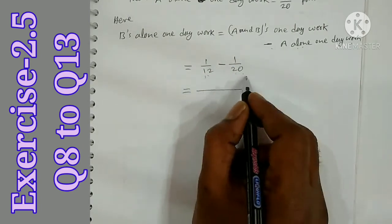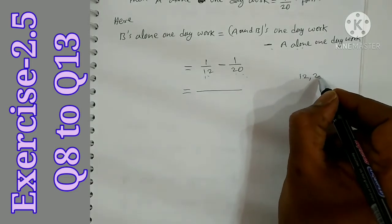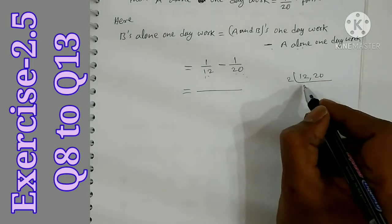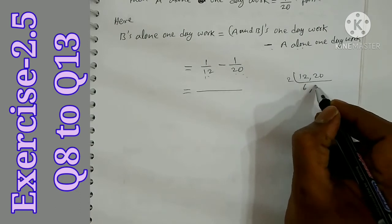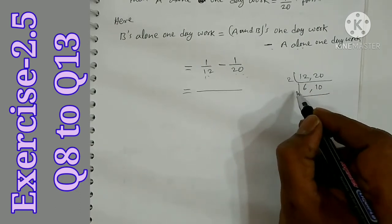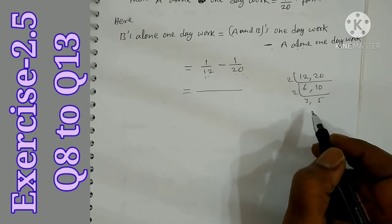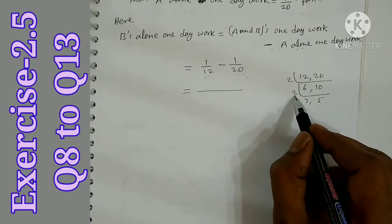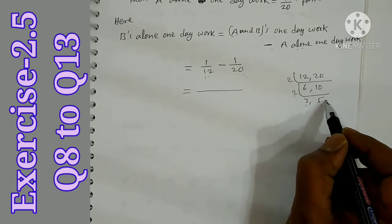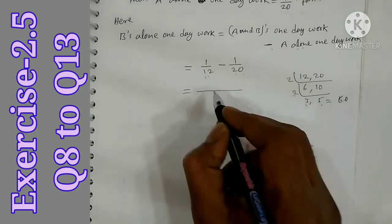LCM of 12 and 20: dividing by 2 gives 6 and 10, then by 2 gives 3 and 5. So LCM is 2 times 2 times 3 times 5 equals 60. The LCM is 60.